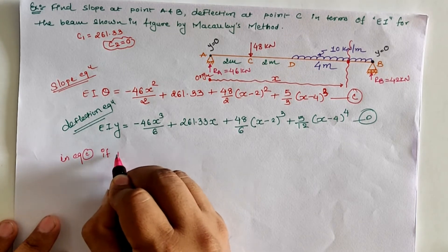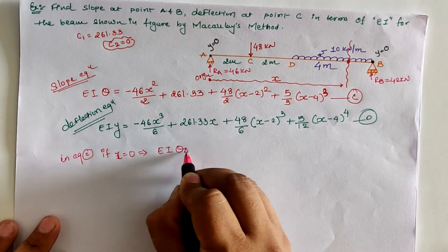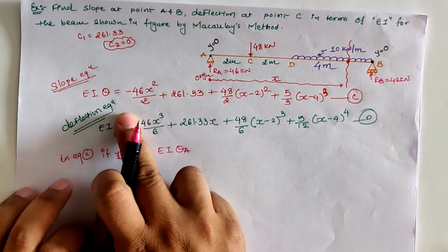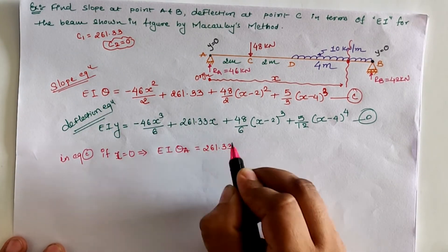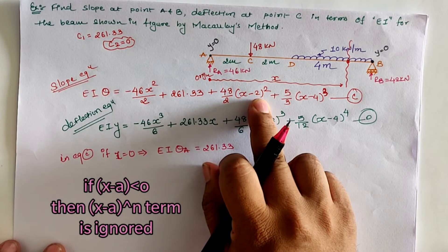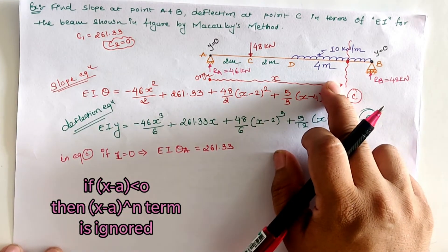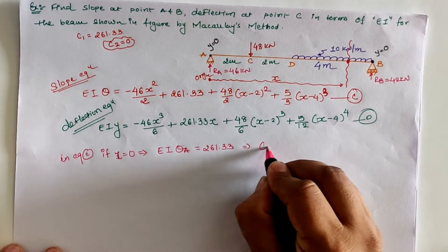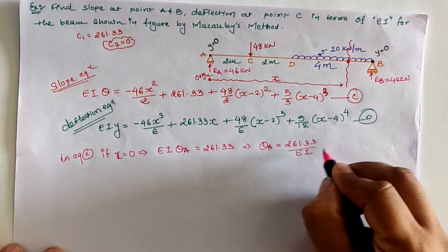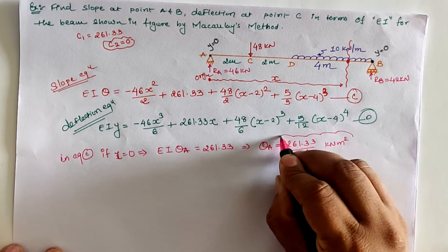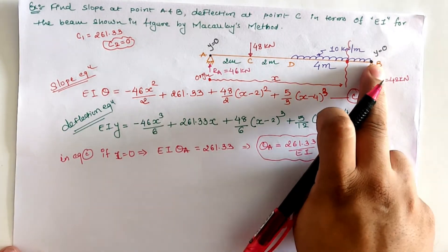To find the slope at location A, we set x equals 0 in Equation C. The first term (46x squared / 2 type term) becomes zero, C1 equals 261.33 remains, and terms (x minus 2) and (x minus 4) are negative so they are ignored. Therefore the rotation at A equals 261.33 divided by EI in units of kN·m squared.